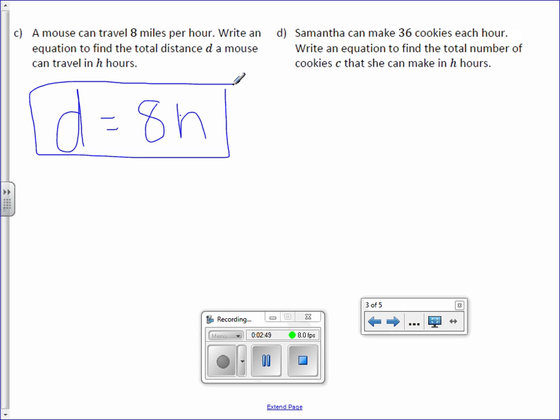Letter D. Samantha can make 36 cookies each hour. Write an equation to find the total number of cookies, C, so total number, that she can make in H hours. C equals, and we start with C because it's the total, and we take 36 and multiply it by H hours. So the equation is C equals 36H.